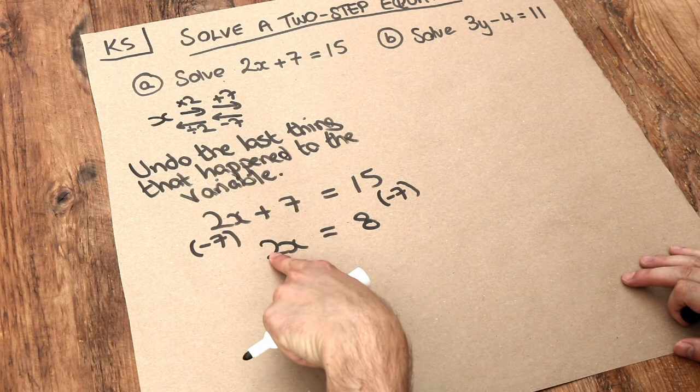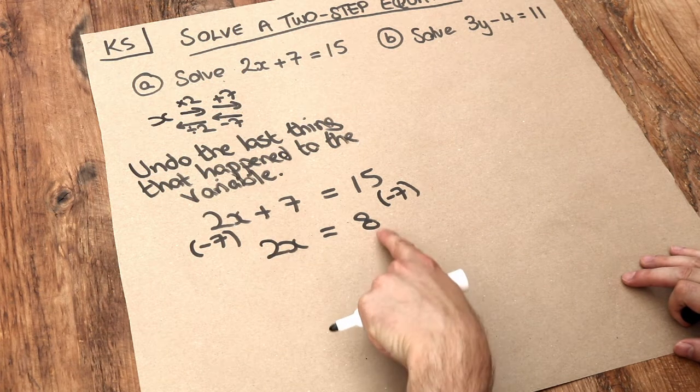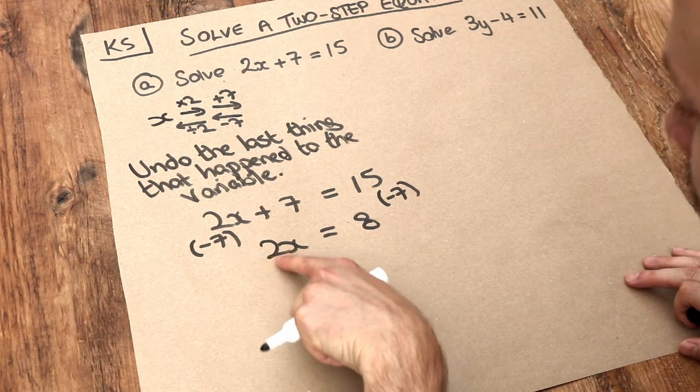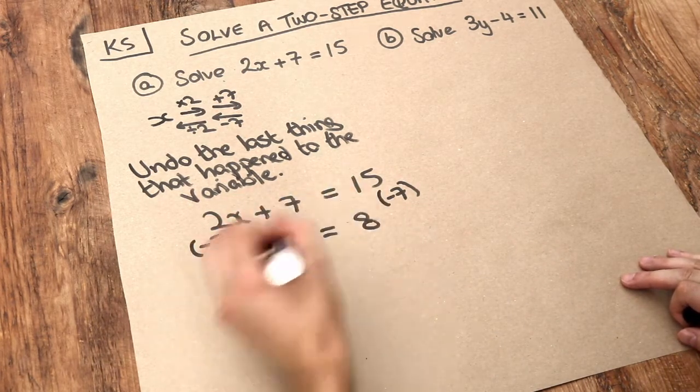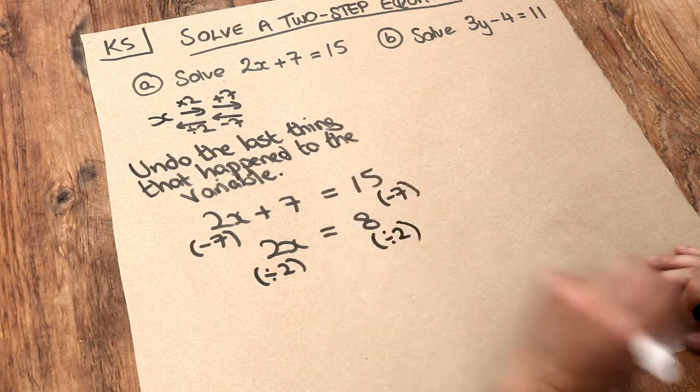Now x multiplied by 2 gave us 8. So we want to undo that multiplied by 2. What's the opposite of times by 2? Dividing by 2. So we divide the left-hand side by 2, and divide the right-hand side by 2.